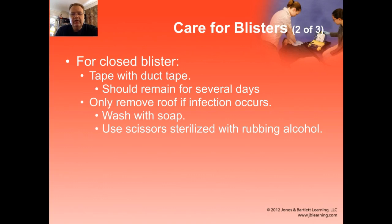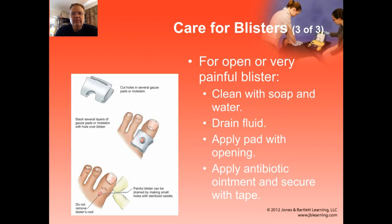If you need to open a blister, wash it with soap and sterilize scissors with rubbing alcohol to trim the skin. For a very painful or already-open blister, clean it, drain any fluid, and cut away excess tissue — that dead roof tissue becomes a place for bacteria to grow if left behind. Apply a pad with a small opening to keep the area from rubbing, then apply antibiotic ointment and secure with tape.